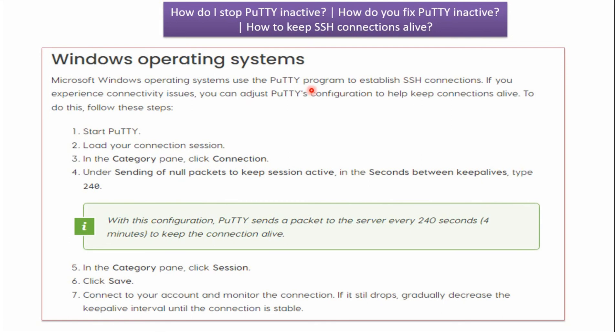Microsoft Windows operating system uses PuTTY program to establish SSH connections. And if you experience connectivity issues, then you can adjust PuTTY configuration. That is what we have done, and that makes the connection alive.